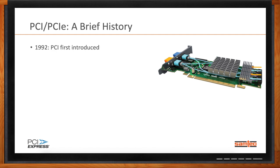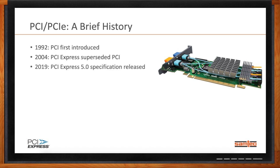In 1992, PCI, or the Peripheral Connector Interconnect, was introduced by the PC industry to link CPUs to peripherals within the PC. That standard went through multiple revisions before PCI Express was actually introduced in 2004. As we move forward towards today, what most engineers and system designers are focusing on is the latest specification, PCIe 5.0, which was released last year. Each standard since 2004 has doubled the speed from the previous revision. So PCI Express 5.0 currently supports 32 gigatransfers per second per lane, providing an aggregate of 128 gigabytes per second using a x16 configuration.